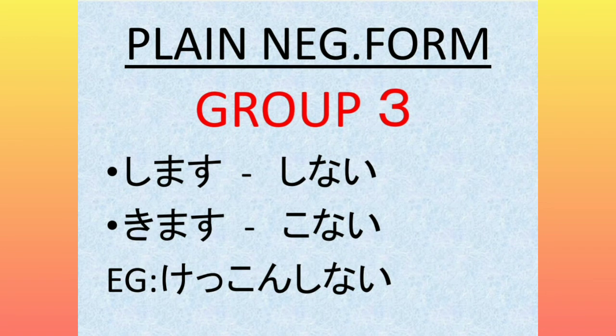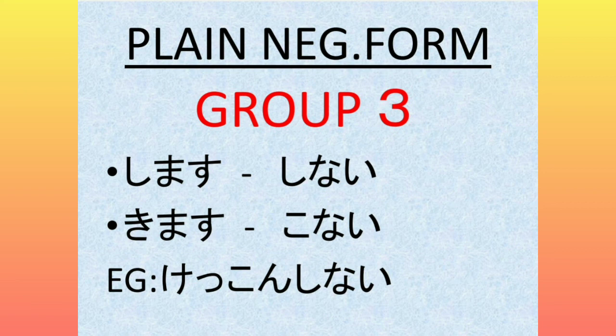Now we come to Group 3, which is very easy. There are two irregular verbs: Shimasu and Kimasu. Shimasu becomes Shinai. Kimasu becomes Konai. For example, Kekkon Shimasu (to get married) — the plain negative is Kekkon Shinai. The polite negative is Kekkon Shimasen.